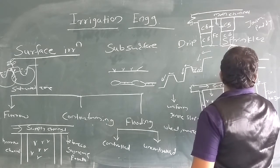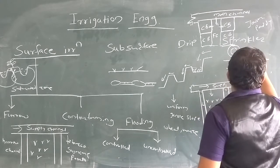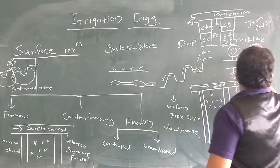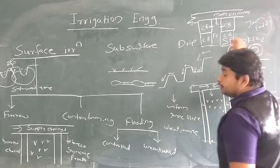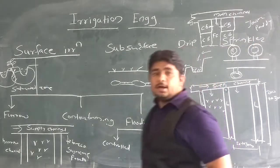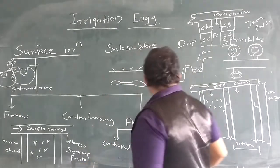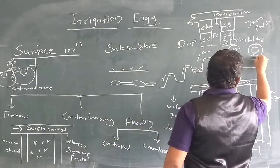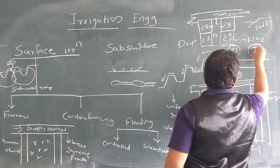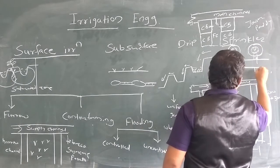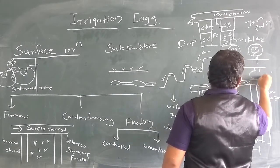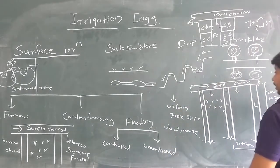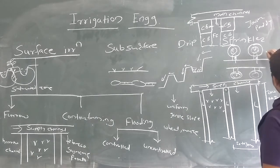Next is the ring basin method. In this type of method, a tree is surrounded by a circular channel and water flows in this circular channel. This method is suitable for orchard trees.